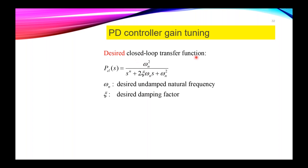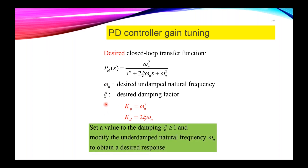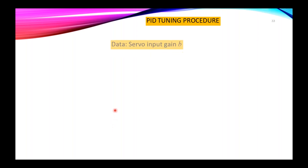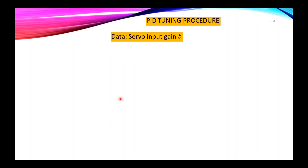To tune the PD controller, we consider a desired closed-loop transfer function in which omega-n corresponds to the desired undamped natural frequency and zeta is the desired damping factor. From this equation, it is possible to obtain formulas for computing the proportional and derivative gains as functions of omega-n and zeta. The idea is to set the damping factor equal to or greater than one, and to modify the natural frequency omega-n to obtain a desired response.